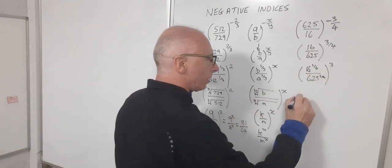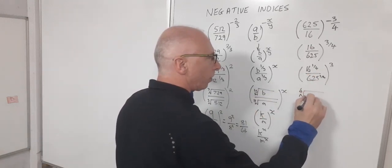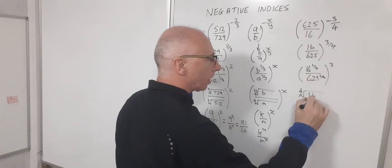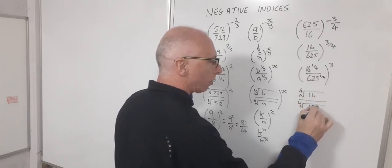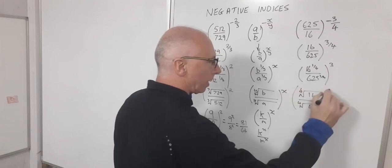So let's write that. So now I've got the fourth root of 16 divided by the fourth root of 625 and then that's all cubed.